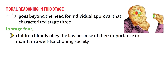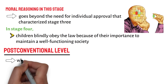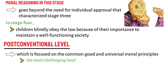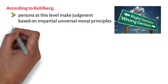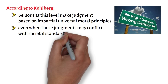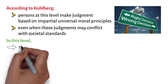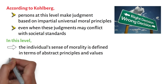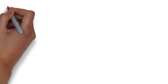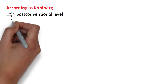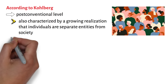The post-conventional level, which is focused on the common good and universal moral principles, is the most challenging level. According to Kohlberg, persons at this level make judgments based on impartial universal moral principles, even when these judgments may conflict with societal standards. Hence, in this level, the individual's sense of morality is defined in terms of abstract principles and values. Individuals now believe that some laws are unjust and thus must be repealed, if not eliminated. The post-conventional level is also characterized by a growing realization that individuals are separate entities from society and may disobey rules inconsistent with their own beliefs and principles.